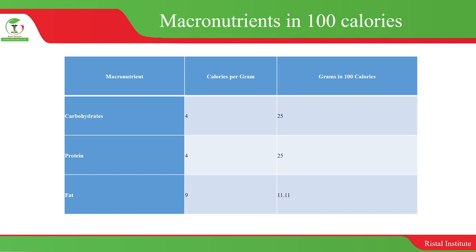Let's look at some macronutrients in 100 calories. Macronutrients include carbohydrates, proteins, and fats. Carbohydrates contribute 4 calories per 1 gram. For proteins, it is also the same — 4 calories per gram. Fats have the highest amount of calories per gram, which is 9 calories.